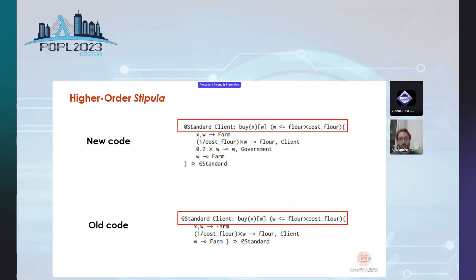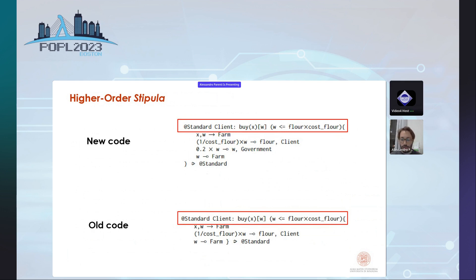We could also think of a situation where we wanted to introduce the possibility for the client to buy more flour than the one available. In that case, we would define a constraint stating that the value w is higher than that formula, meaning they could ask for more flour than is available. With this setting, we would have two different versions of the buy function called differently depending on the input value given by the client at the moment of the call. This is what priority and constraints in the managing of the dispatch mean — these are the functionalities of higher-order Stipula.